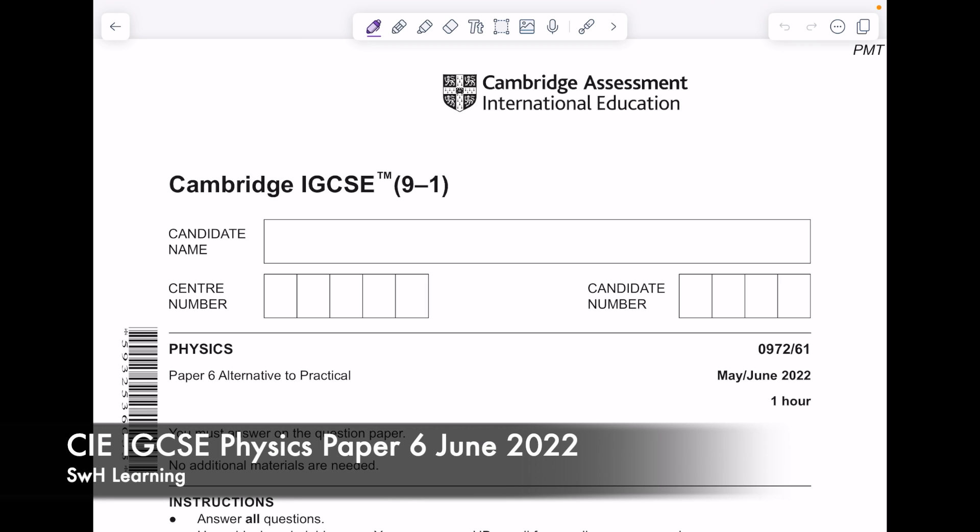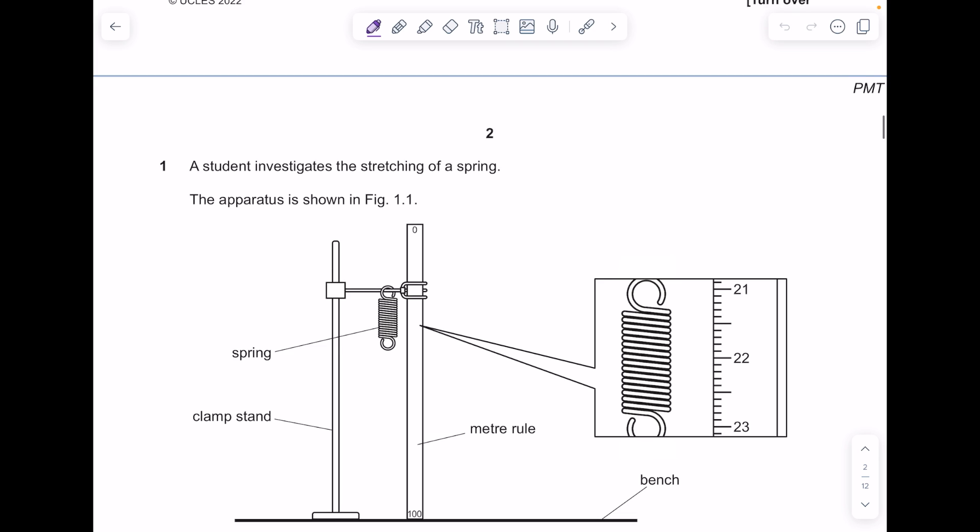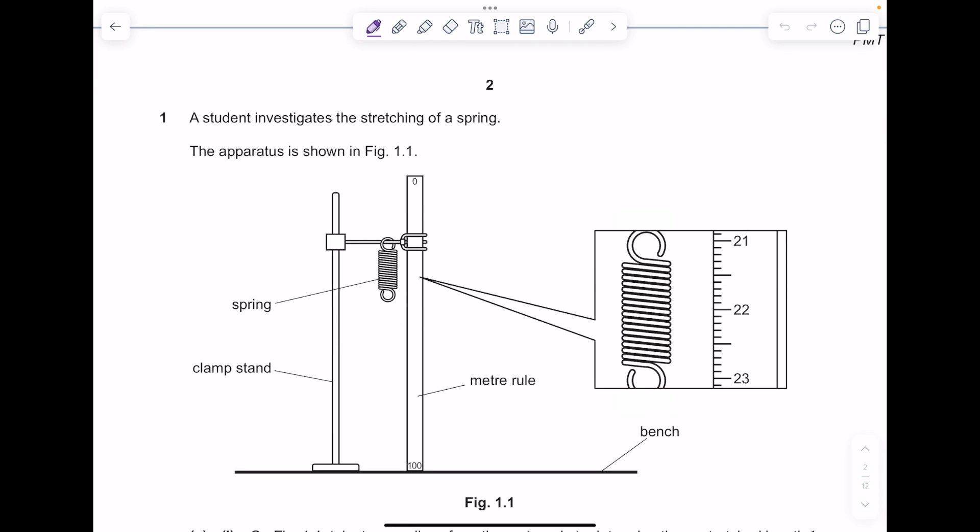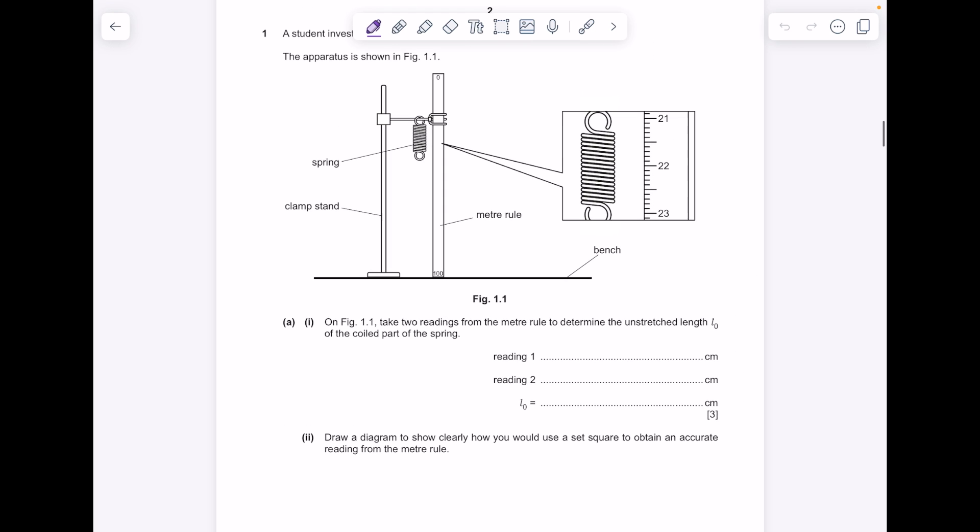This is a Cambridge IGCSE physics paper 6 task 3 from June 22. A student investigates the stretching of a spring. On figure 1.1, take two readings from the meter rule to determine the unstretched length, length zero, of the coiled part of the spring.